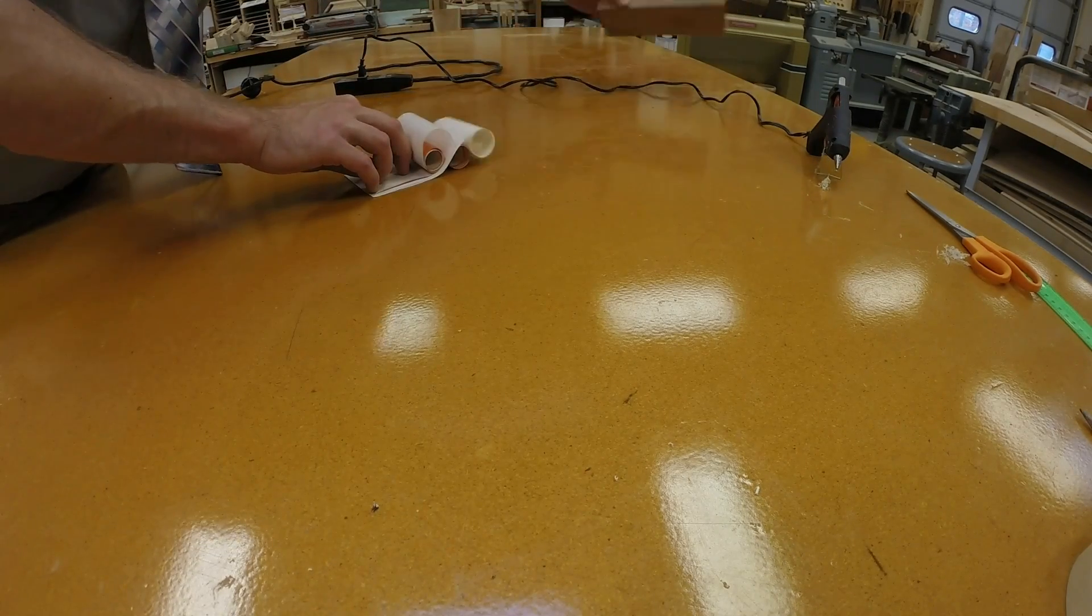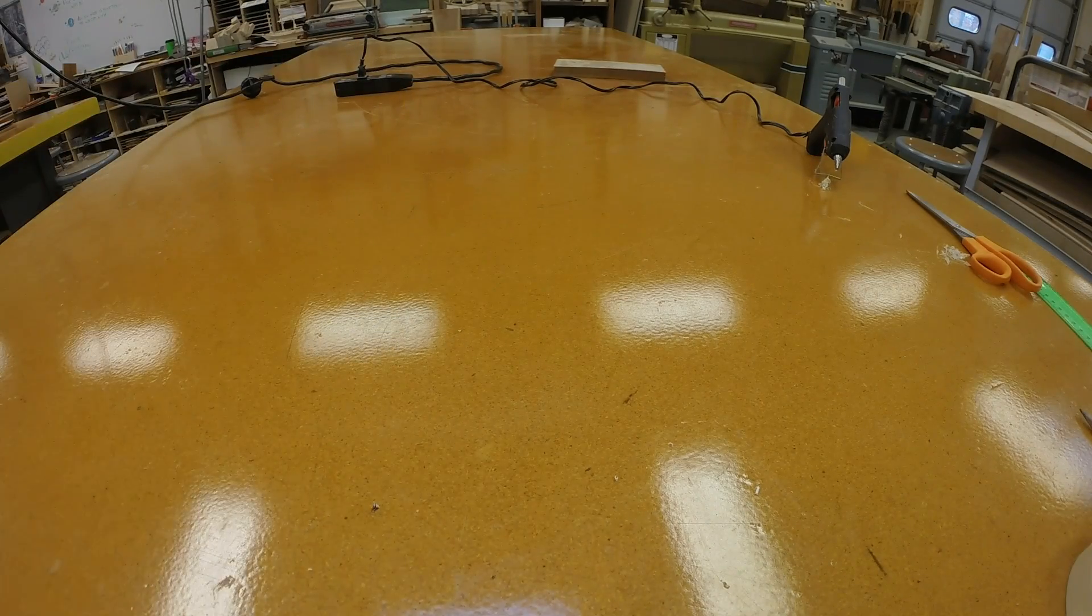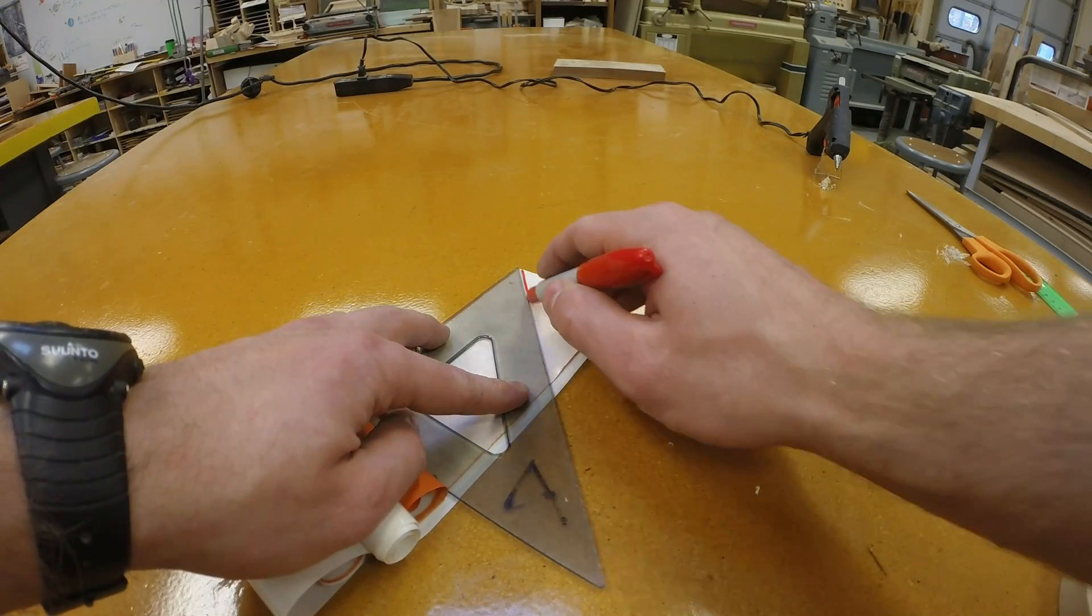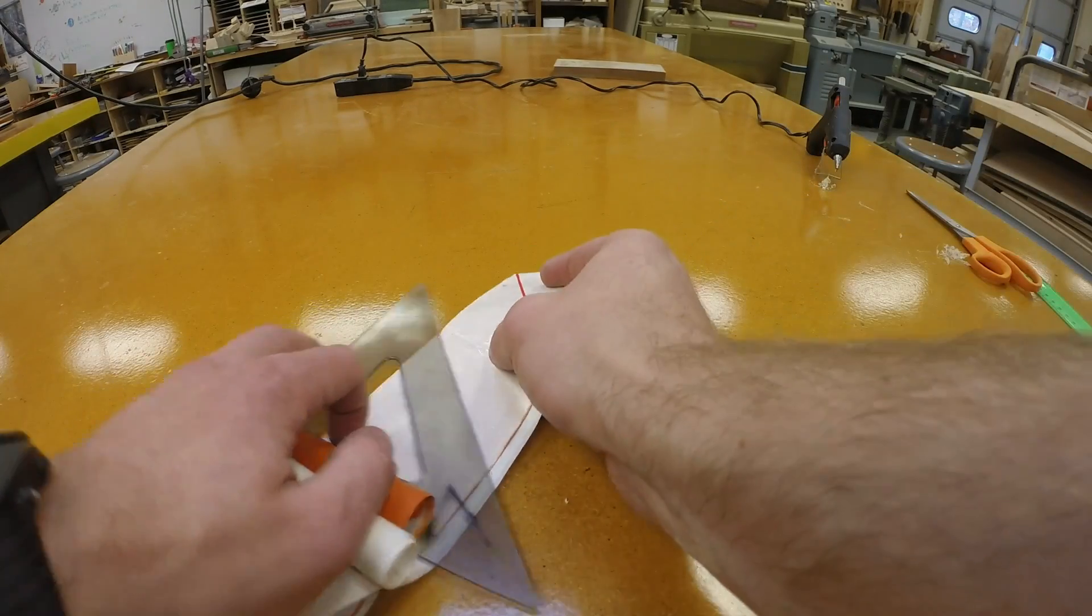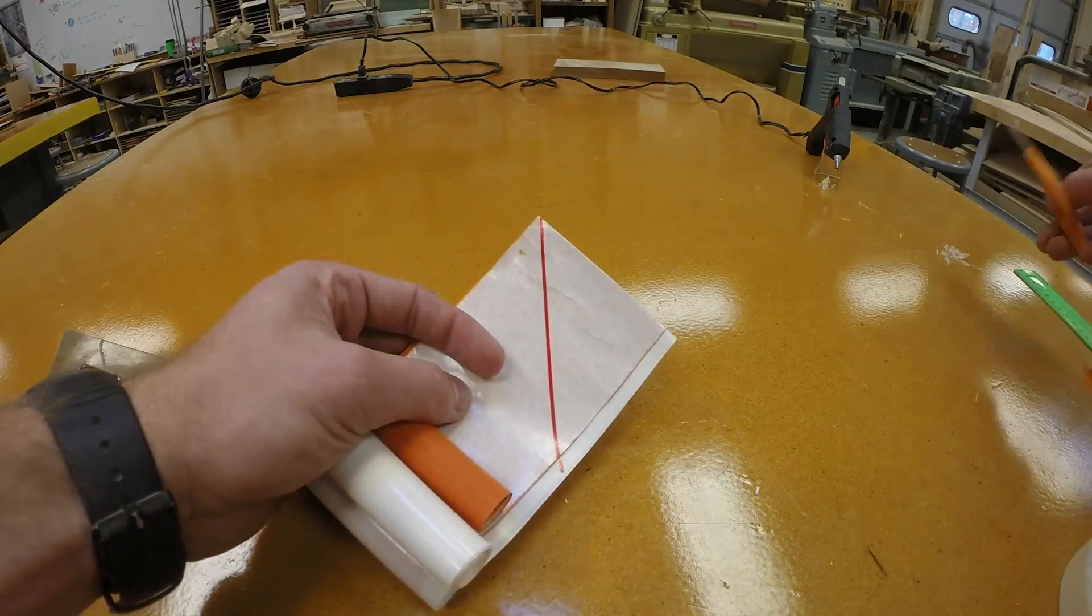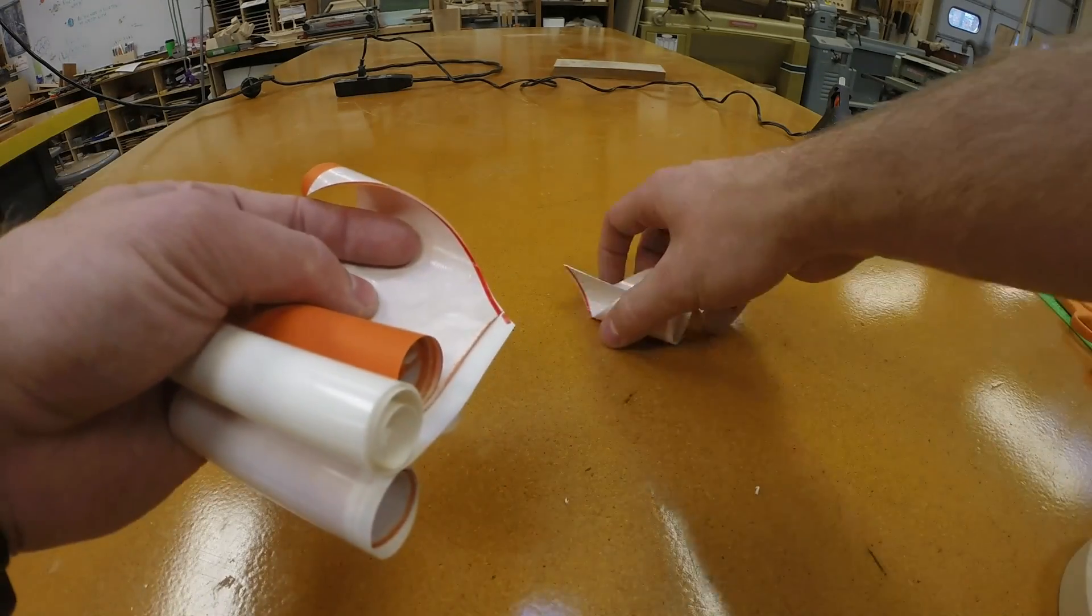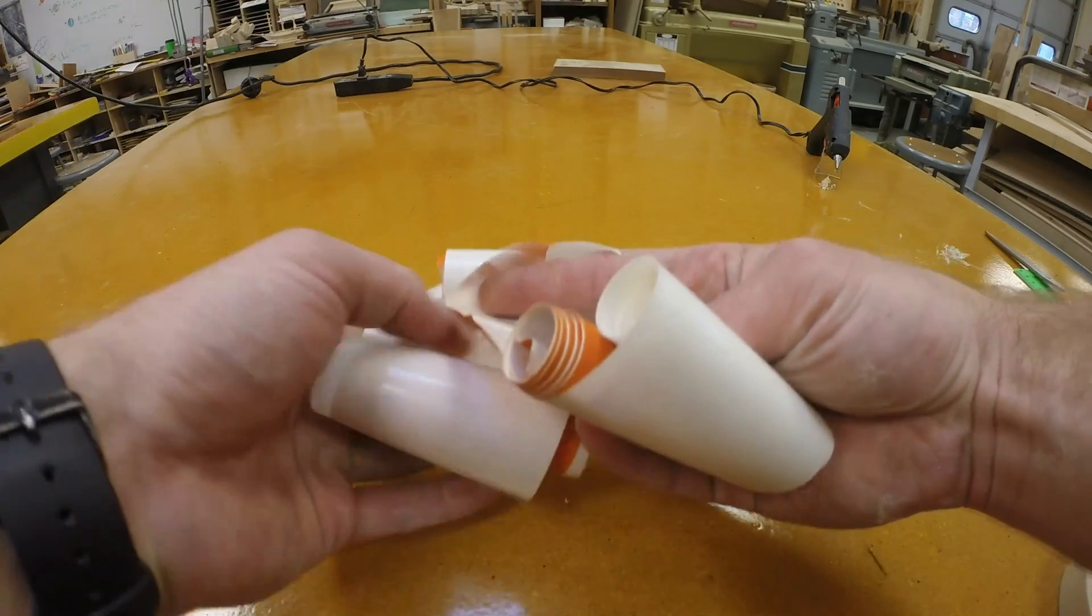In the center of the body tube wrap where you made your crease, you're going to draw a line at 45 degrees. Use a tool if you need to, but you're going to cut along this line and what you should end up with is two exactly equal pieces of body tube wrap that have both got an angle cut in the end. And the angle should be opposite from one to the next.